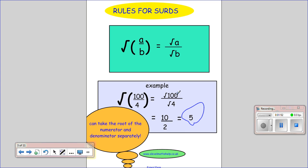So what have we done? We've split the root into the root of the numerator over the root of the denominator. The square root of 100 gives you 10 and the square root of 4 gives you 2, and 10 divided by 2 gives you 5 as expected. Obviously we wouldn't normally have such nice numbers.